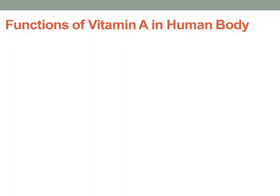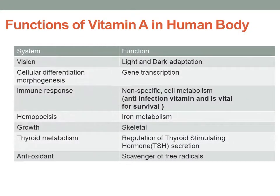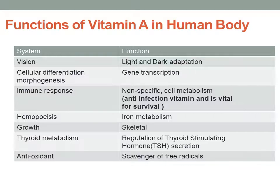A quick recap of the functions of vitamin A: Vitamin A is necessary for vision, cellular differentiation, and maintaining our immune system. It is also needed for iron metabolism or hematopoiesis, growth and development, and thyroid metabolism. Vitamin A also acts as an antioxidant, meaning it will clear free radicals from the body.